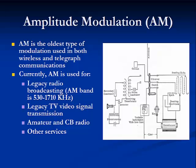This example of early information transmission used both long and short bursts of either voltage, current, or electromagnetic energy to represent the dots and dashes of Morse code. The first wireless transmitters used a form of AM known as on-off keying, or OOK.